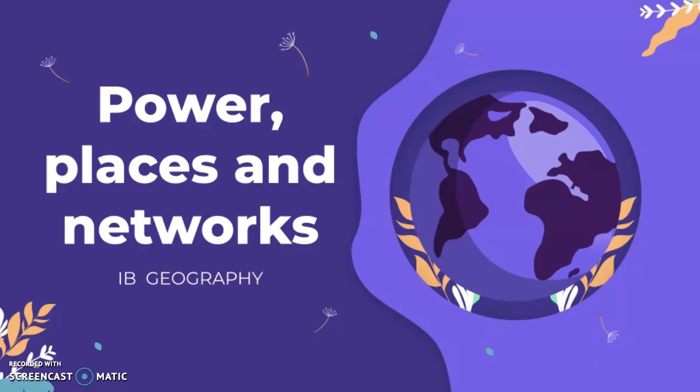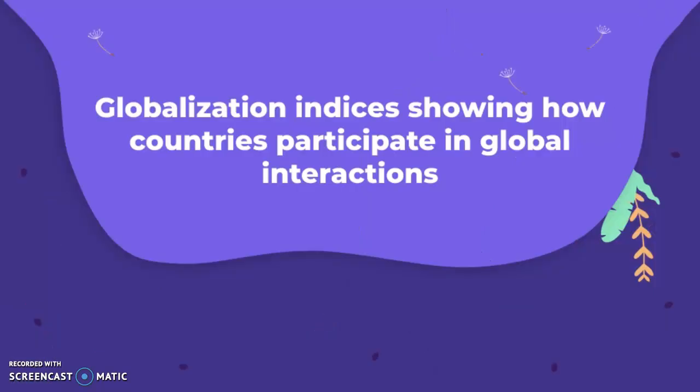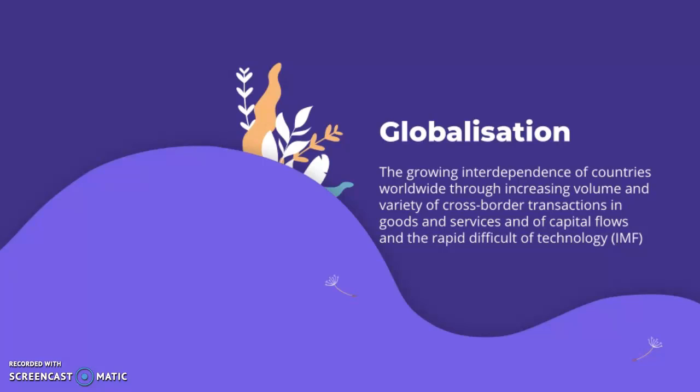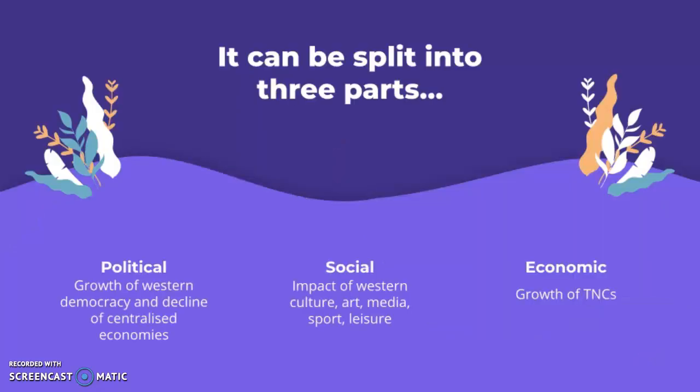This video is about power places and networks for IB Geography. The part of the syllabus covered is globalization indices showing how countries participate in global interactions. The definition of globalization is the growing interdependence of countries worldwide through increasing volume and variety of cross-border transactions in goods and services, capital flows, and the rapid diffusion of technology, as defined by the IMF. The idea of globalization can be split into three parts: political, social, and economic.